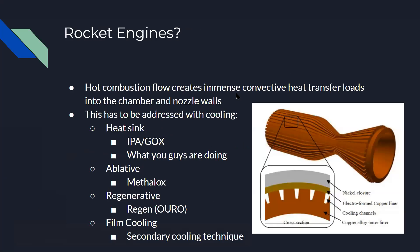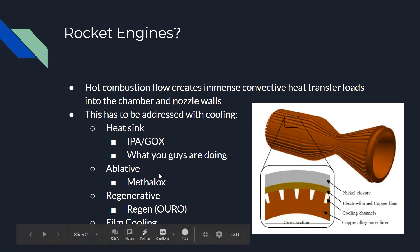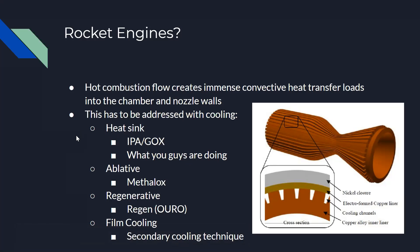In the context of rocket engines, the hot combustion flow and nozzle exhaust create an immense amount of convective heat transfer into the chamber and nozzle walls. This has to be dealt with — otherwise the engine will melt. There are various ways to address that.